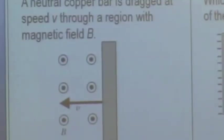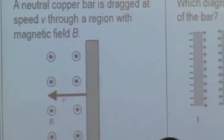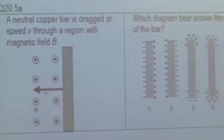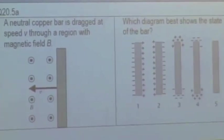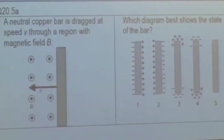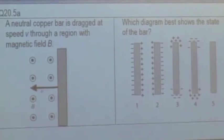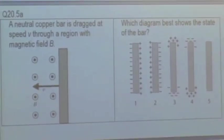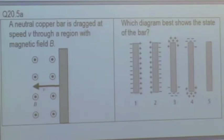If a bar of copper has mobile electrons in it and I take this bar and move it through a magnetic field — the magnetic field is pointing out of the board — what's going to happen to the copper? Which diagram best shows the state of this copper bar? Think about the mobile charges inside the bar: they are moving along with the entire bar, so think about what would happen to them in the presence of this magnetic field.